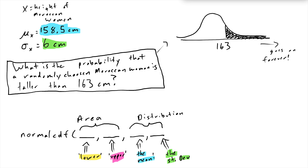To answer this question, we want to find this area. The value 163 centimeters is going to become the lower value, because we're always thinking about left to right — what's the smallest number we want the calculator to start calculating the area at? We want it to start at 163. When we use the normalCDF function, the first number is the lower, so 163 is going to be the lower value.